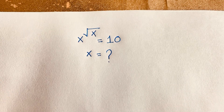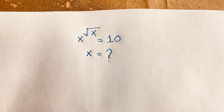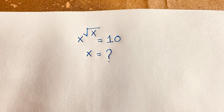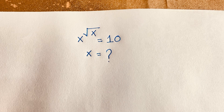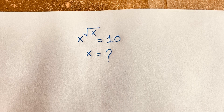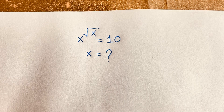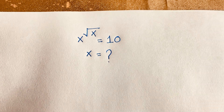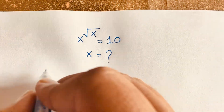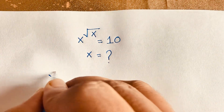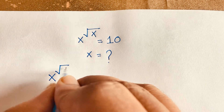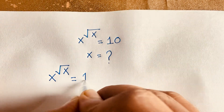Hello everyone. In this video we have solved this interesting math olympiad question. Here is x to the power square root x is equal to 10. x is equal to what? How to solve this question? x to the power square root 10. It is interesting math so let's start the solution. Our question is x and square root x is equal to 10.